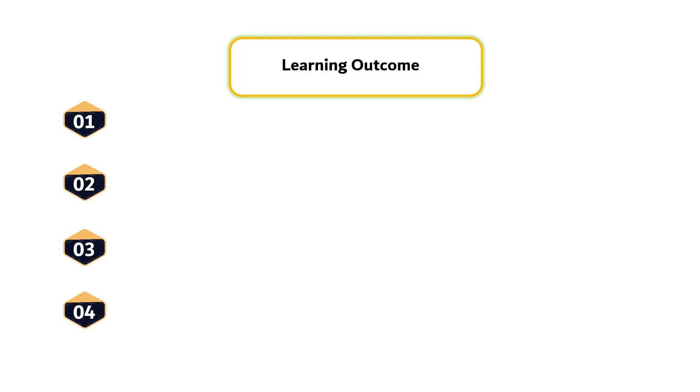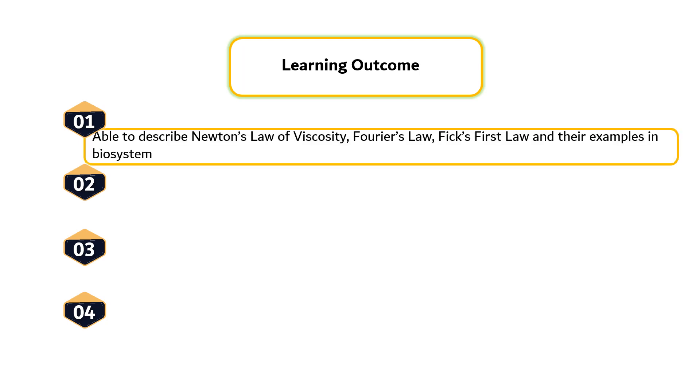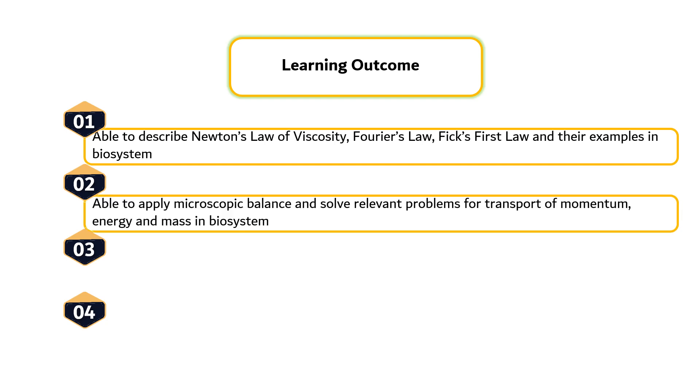There are four learning outcomes that need to be achieved by students at the end of this course. First, students able to describe Newton's law of viscosity, Fourier's law, Fick's first law and their examples in biosystem. Second, students able to apply microscopic balance and solve relevant problems for transport of momentum, energy and mass in biosystem.